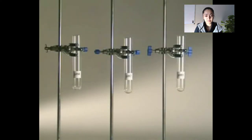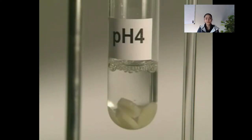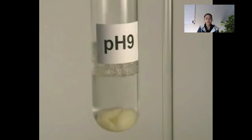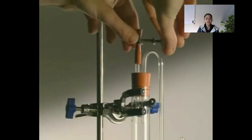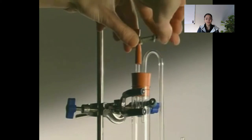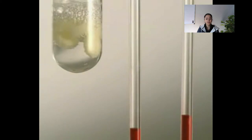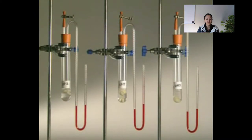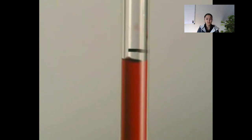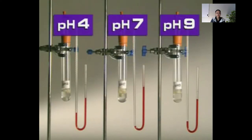As well as being dependent on temperature, enzyme activity is also dependent on pH. The same number of potato discs are placed in test tubes containing hydrogen peroxide solutions at pH 4, 7, and 9. A simple manometer is attached to each tube. As the system is sealed, the oxygen produced pushes against the manometer fluid and causes it to rise up the right-hand side. The speed at which it rises is a measure of how quickly the catalase is breaking down the hydrogen peroxide.